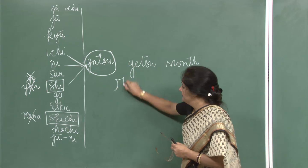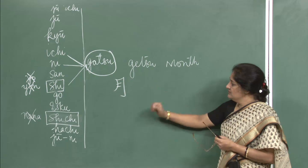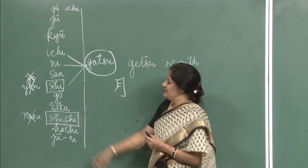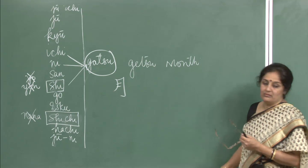Remember gatsu and tsuki — both are readings for the same character. This means January, February, and gatsu itself means month. Now: anata no tanjoubi wa itsu desu ka? Tanjoubi is birthday, wa itsu means when, desu ka. Juugatsu — October — juugatsu no juugonichi desu means the 15th of October.